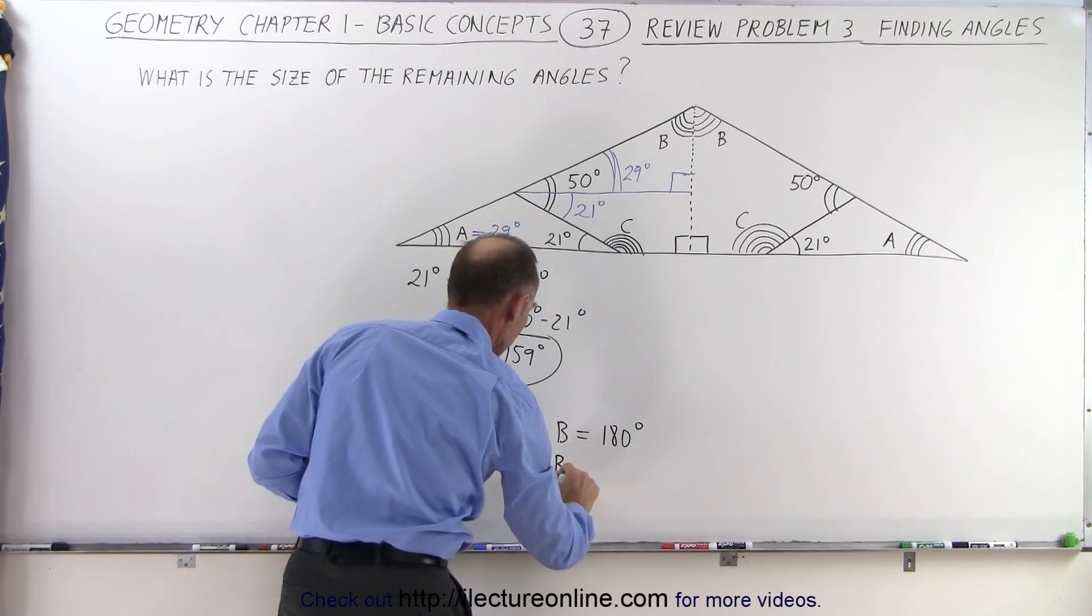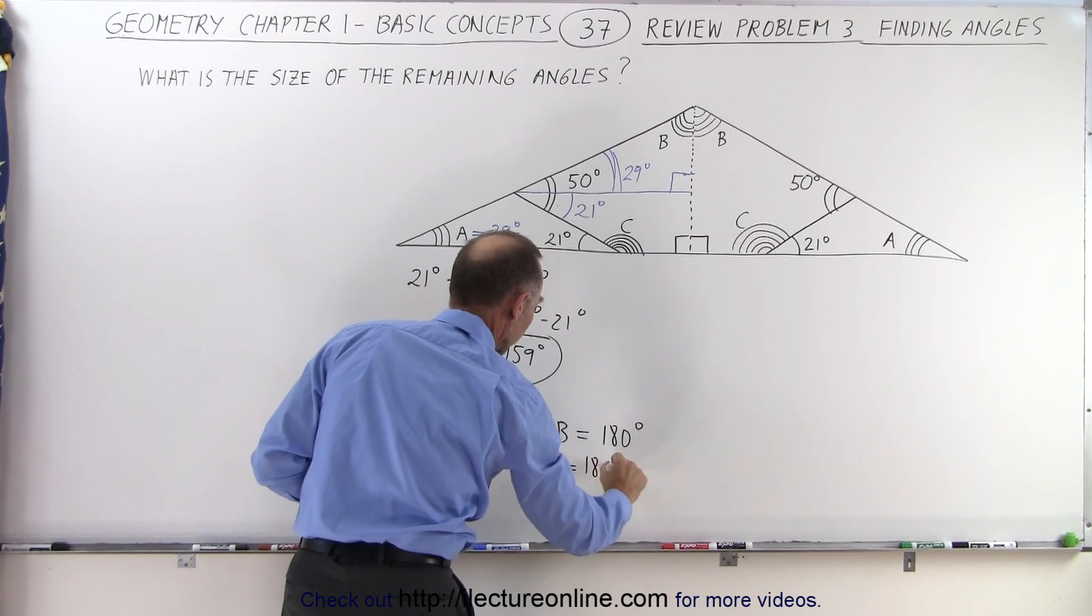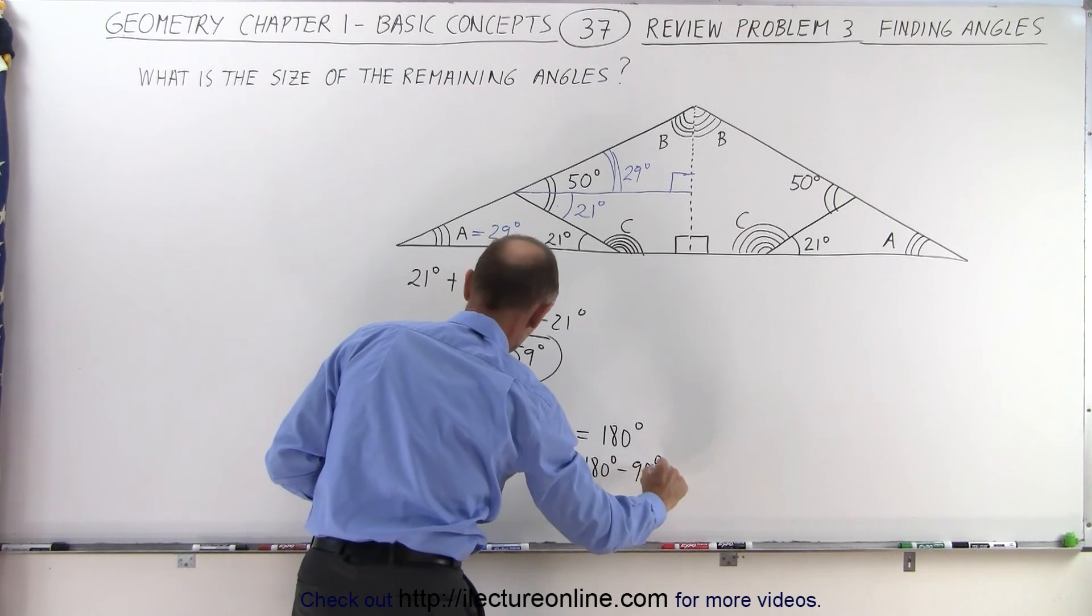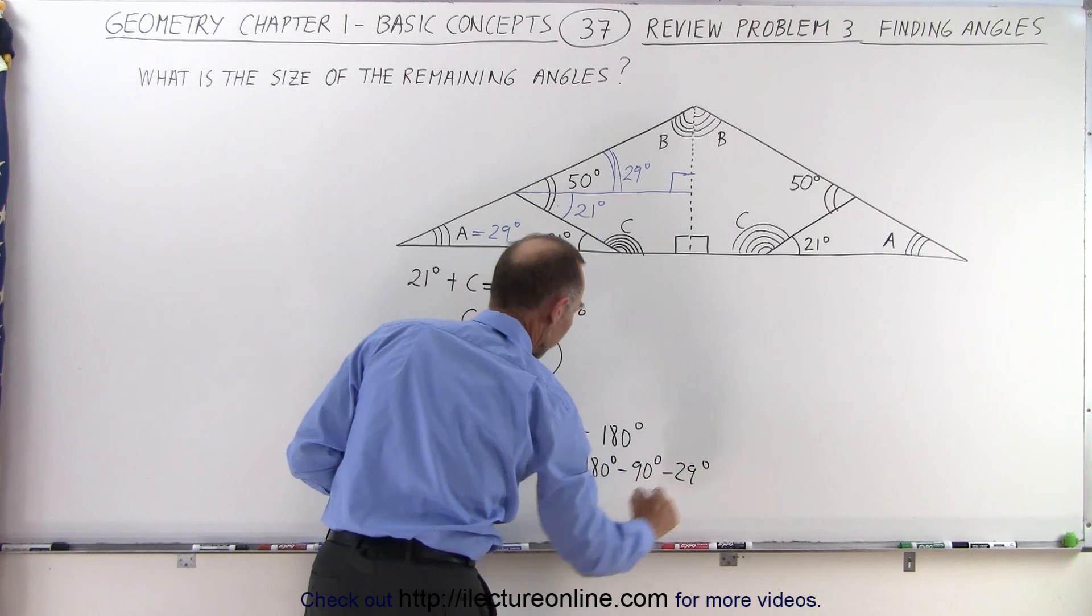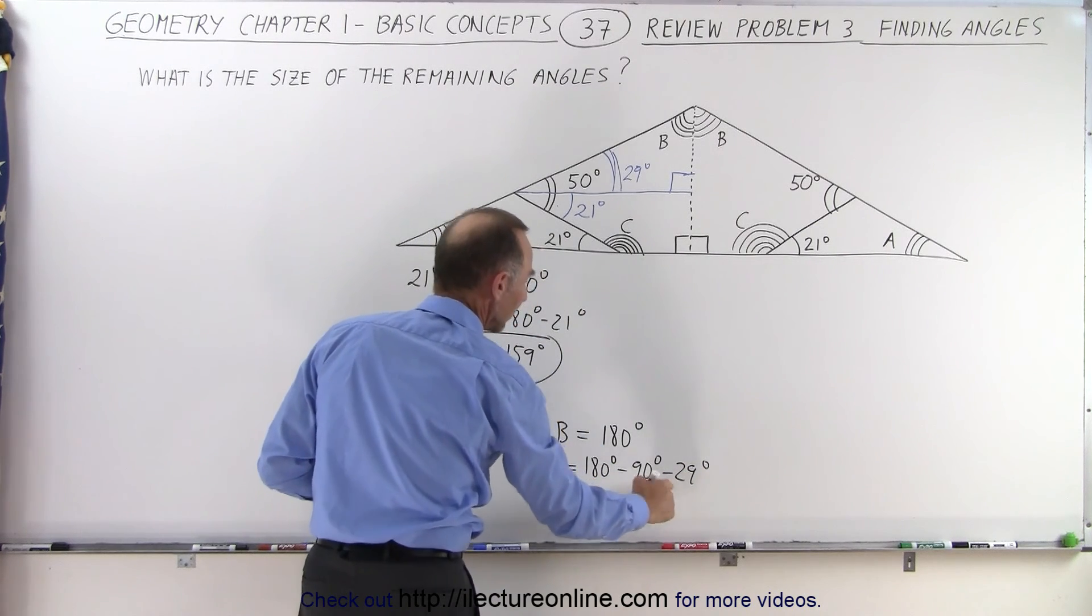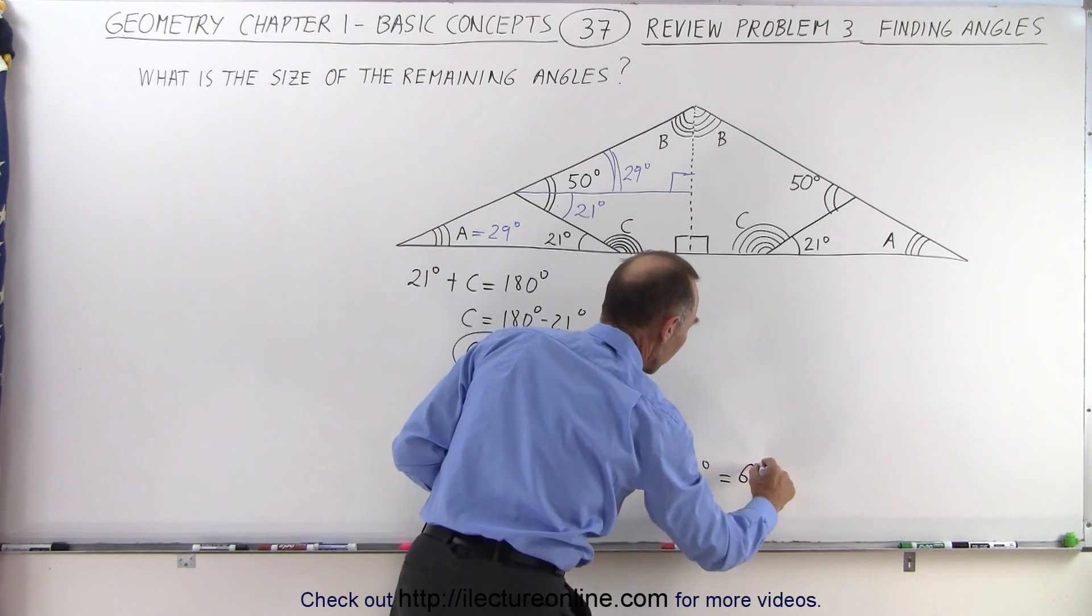So we could say that B is equal to 180 degrees, minus 90 degrees, minus 29 degrees, that's 90 minus 29, which is 61 degrees.